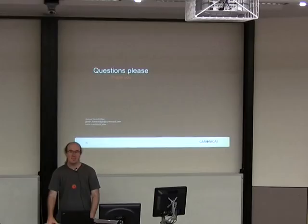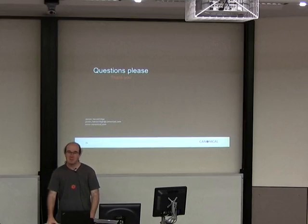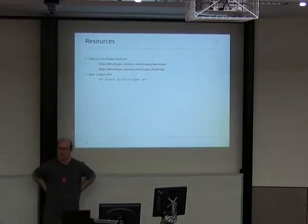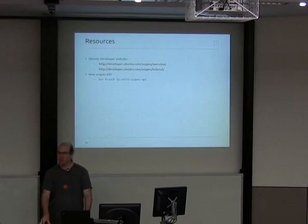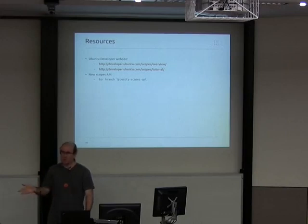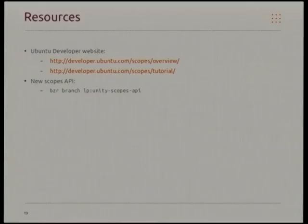The Unity Scopes API project is on Launchpad. It's also getting built into the Unity daily build PPA and is available in the development version of Ubuntu, but pushes to Ubuntu come after all of the integration testing. Given how fast things are developing at the moment, I would suggest going straight to the source code rather than pulling it from Ubuntu directly.